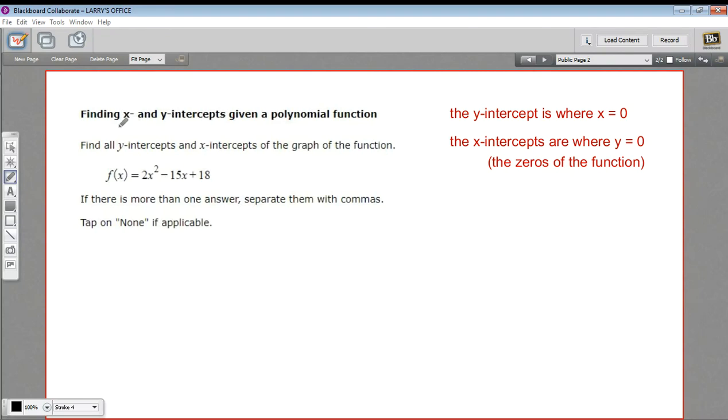In this problem, we're being asked to find both the x and the y-intercepts of a polynomial function. And if it's a function, it's only going to have one y-intercept, because a function can't have the same x value for two different y values. So that makes only one y-intercept possible.